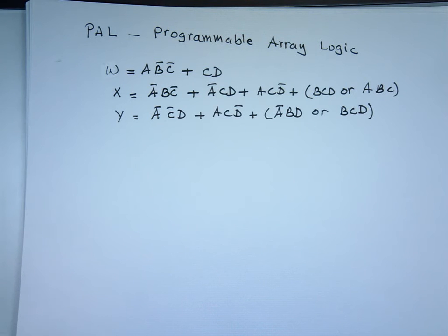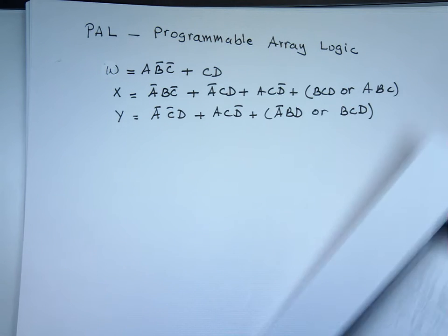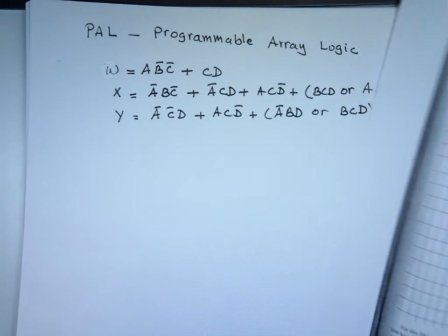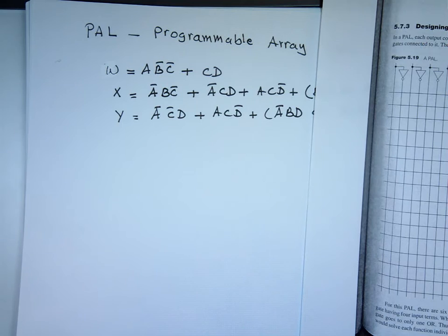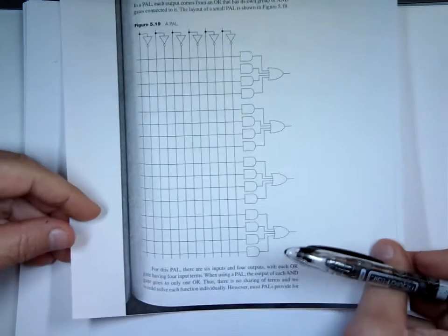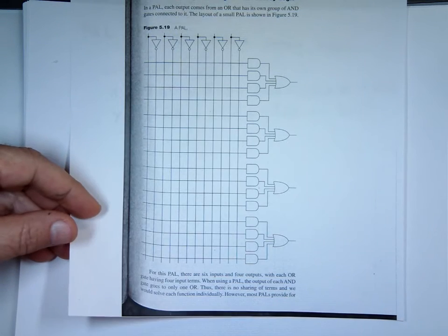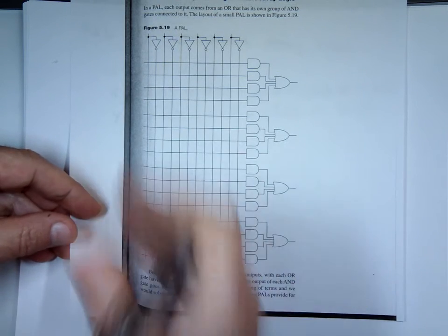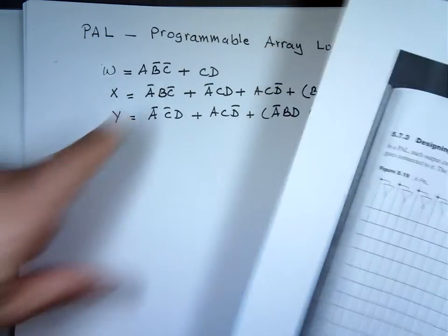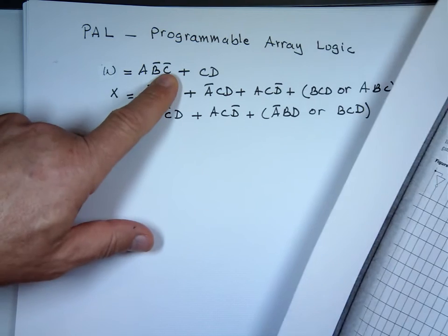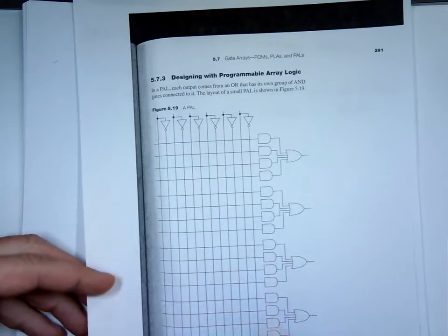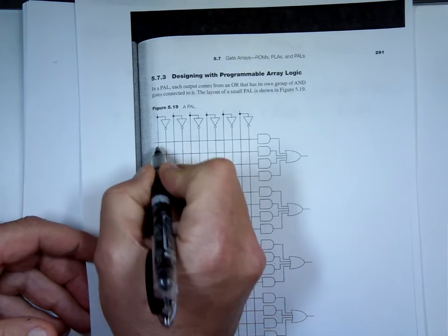I already made copies of this because I don't want to redraw them. This chip comes looking like this — you buy the chip and you have the structure on it. You can even get a smaller one that has four inputs with four outputs; this one has six. The first term is A, B-bar, C-bar, so for the first AND gate I'm going to attach A.